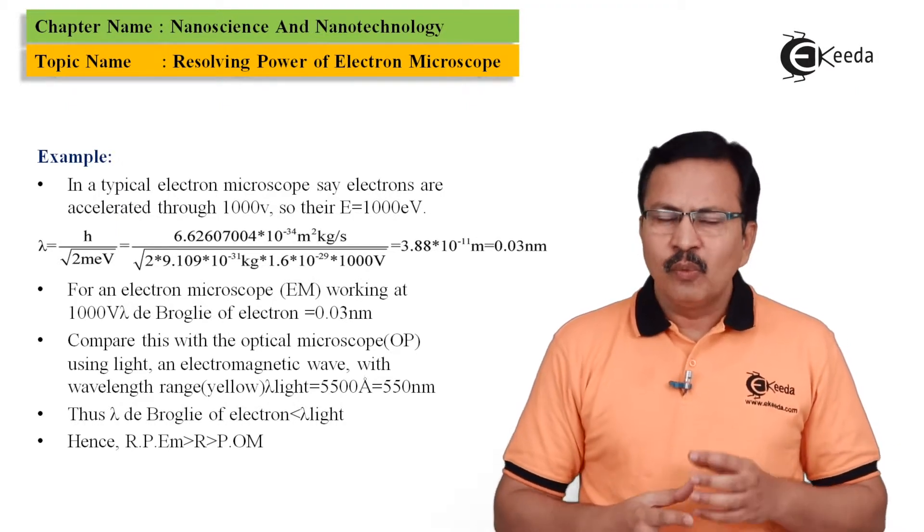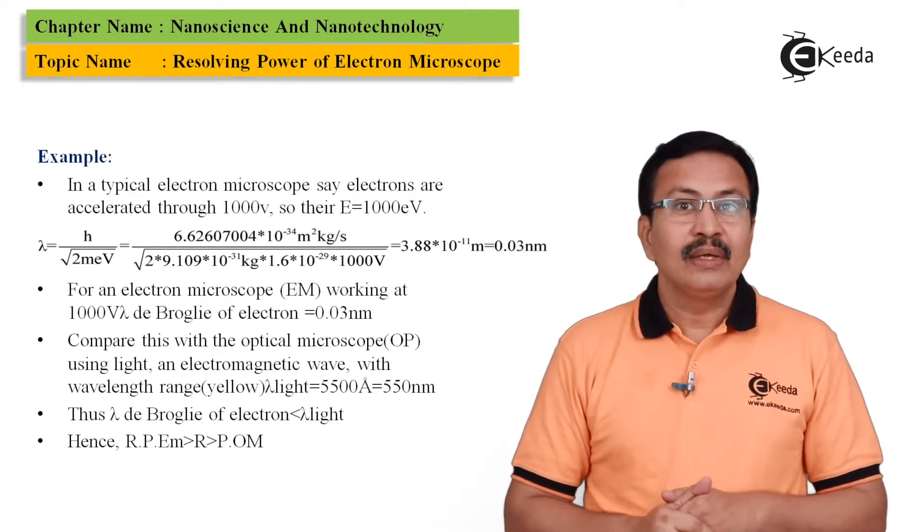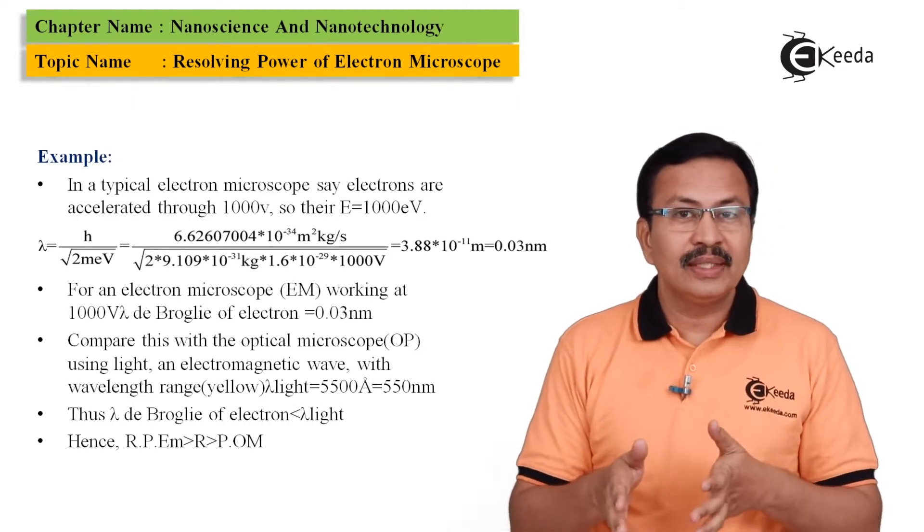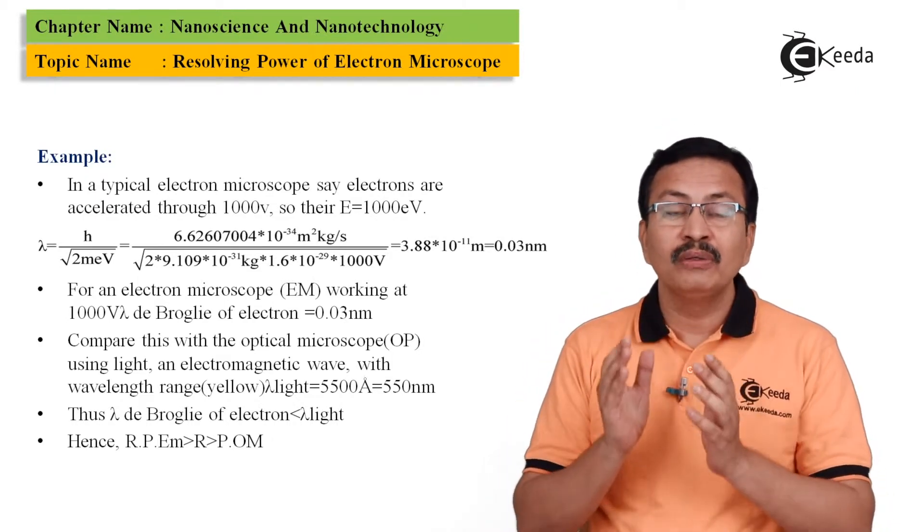Now do you know what is the energy that the electron will acquire? And this energy is nothing but it will be 1000 eV, called as 1000 eV.